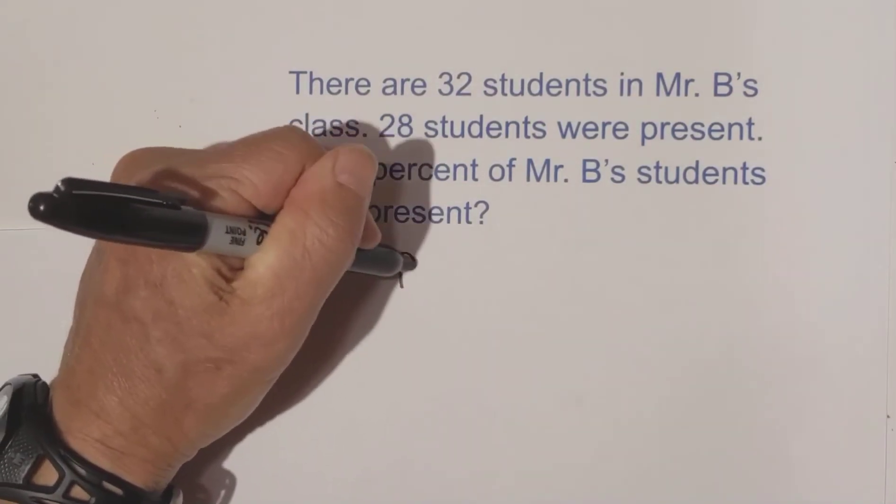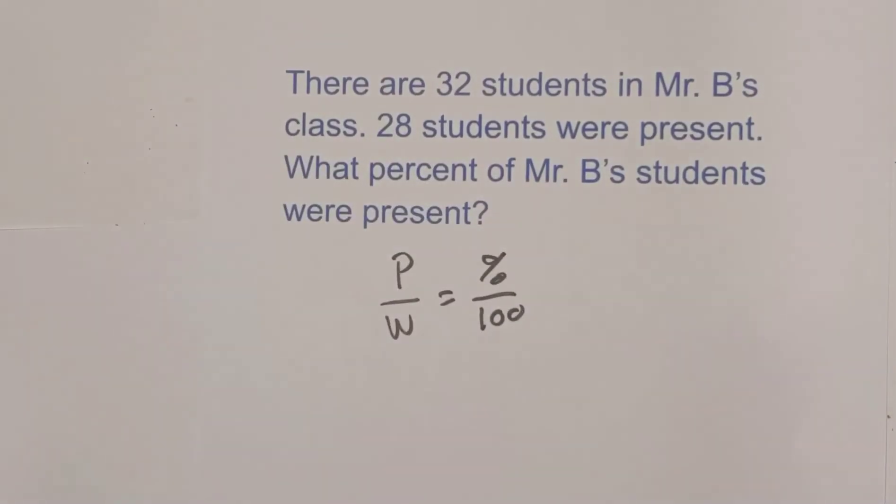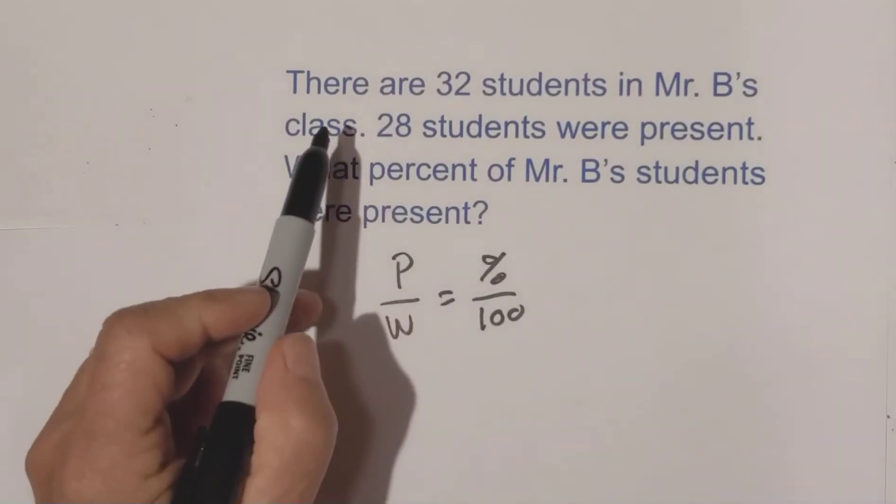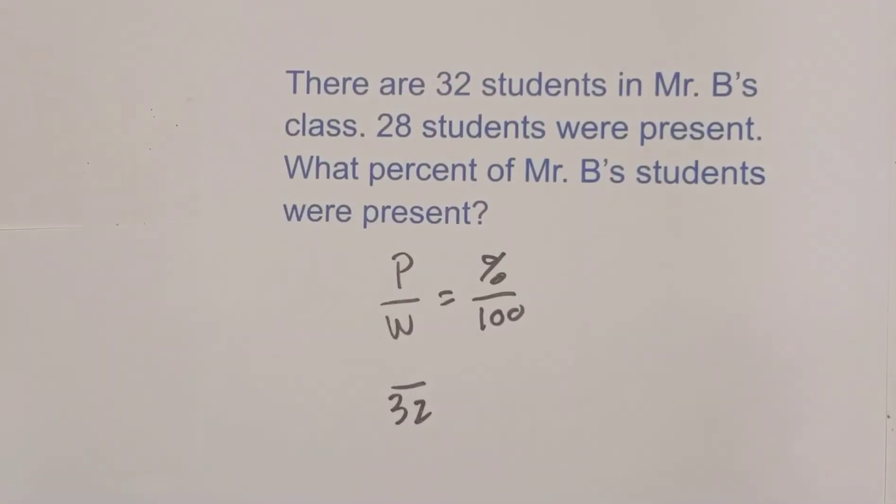Again, we're going to use part over whole equals percent over 100. Okay, let's see. There are 32 students. So that's going to be the whole because that's the total number that they have. That's a messy two, by the way.